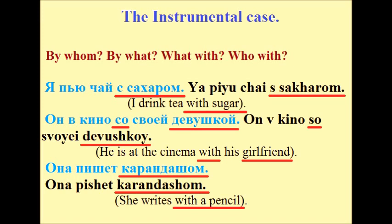Example sentences on the slide: Я пью чай с сахаром — I drink tea with sugar. Он в кино со своей девушкой — He is at the cinema with his girlfriend. Она пишет карандашом — She writes with a pencil.